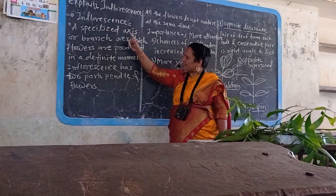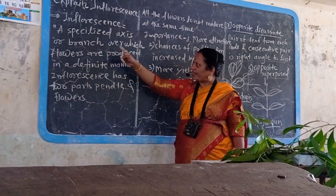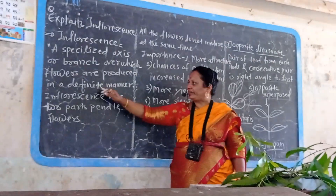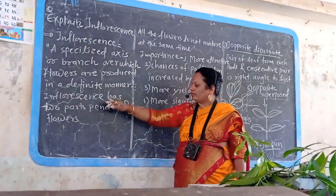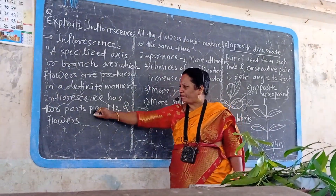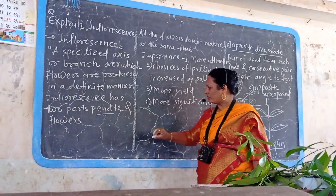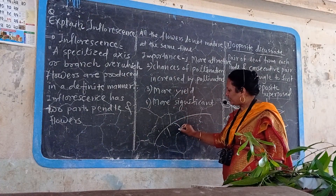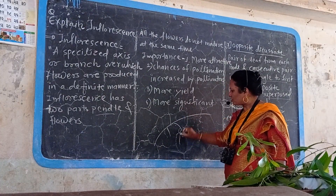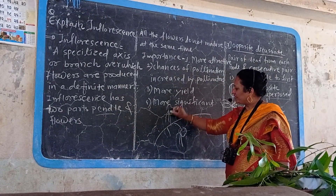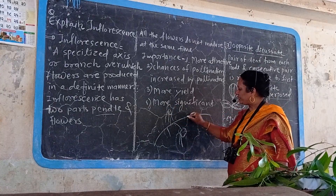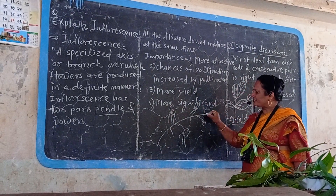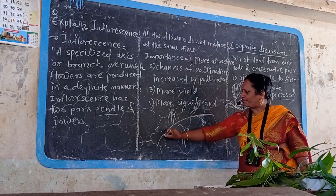Inflorescence is the axis or branch over which flowers are produced in a definite manner. Inflorescence has two parts: the peduncle and the flower. This is the peduncle, and on both sides there is the presence of flowers. For example, in Caesalpinia and Justicia, many flowers are arranged on a single peduncle.